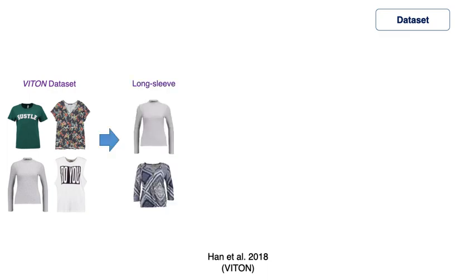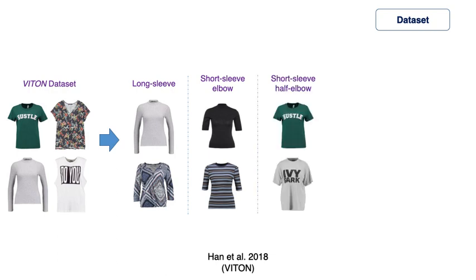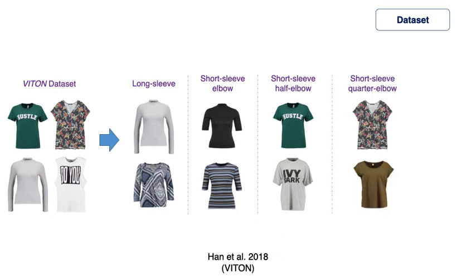We use the VITON dataset for our experiments and results comparison. We divided the clothes from the test dataset into five categories based on sleeve length, for matching against the category-specific prototype shape from the SMPL silhouette.